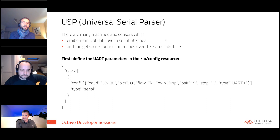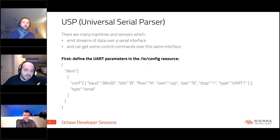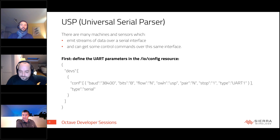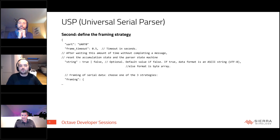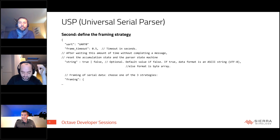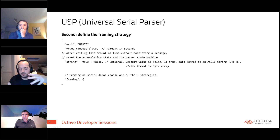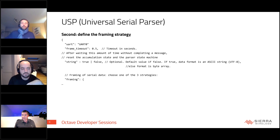To use USP, first configure the UART. If you are familiar with ORP or Modbus in Octave, you put the configuration in the IO config resource — specifying the port, baud rate, bit rate, flow control, etc. — and specify that the owner of this port is USP. Then configure the USP itself by defining a framing strategy in the /usp/config resource, referencing the UART being used. USP will accumulate bytes received from the serial port.